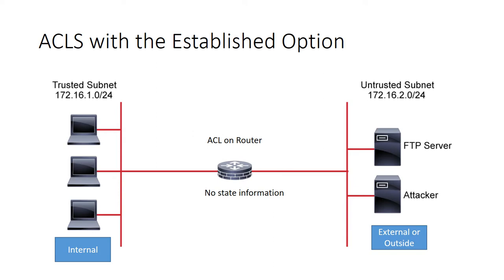Choosing the established keyword in an ACL will cause inspection of the ACK and the reset bit, which will indicate that the packet belongs to an established TCP connection. This means that the TCP connection has completed the TCP three-way handshake: SYN, SYN-ACK, and ACK.